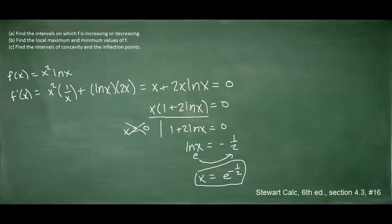After finding the critical numbers, we have to plot them on a number line in order to determine where the function is increasing and decreasing. We will choose values that are less than as well as greater than this critical value and plug them into the derivative. On the calculator, e to the negative 1 half is approximately 0.6, so let's choose 0.5 as a value less than that, and 1 as a value greater than that.